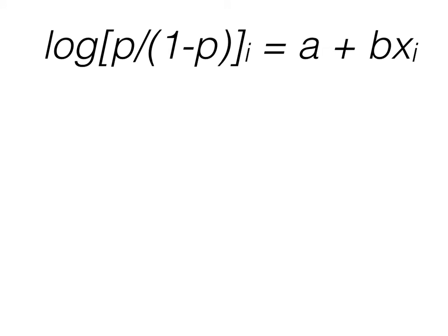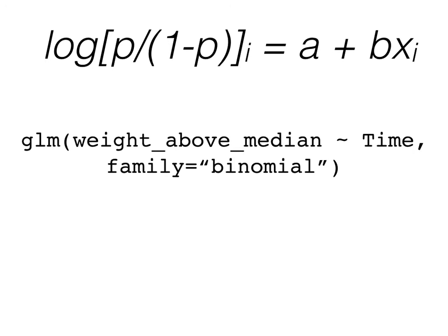Okay, now we're ready to move to the actual R code. Once again, here's our equation for logistic regression. The R code is very similar to our code for linear regression. Before the tilde, we have our y values, so our ones and zeros, or above or below the median. And after the tilde, we have our x values, in this case time.